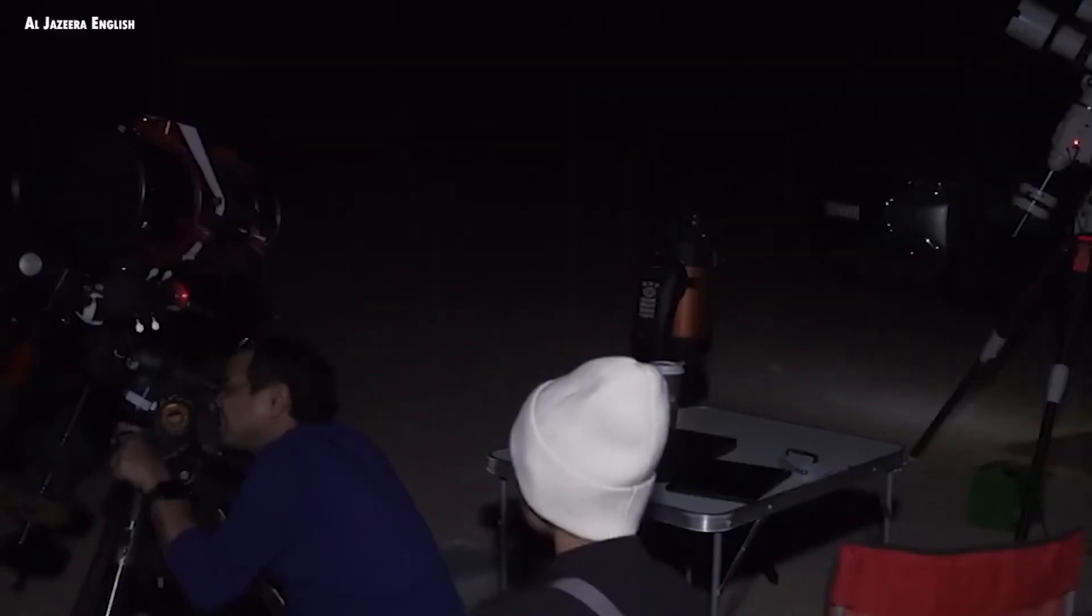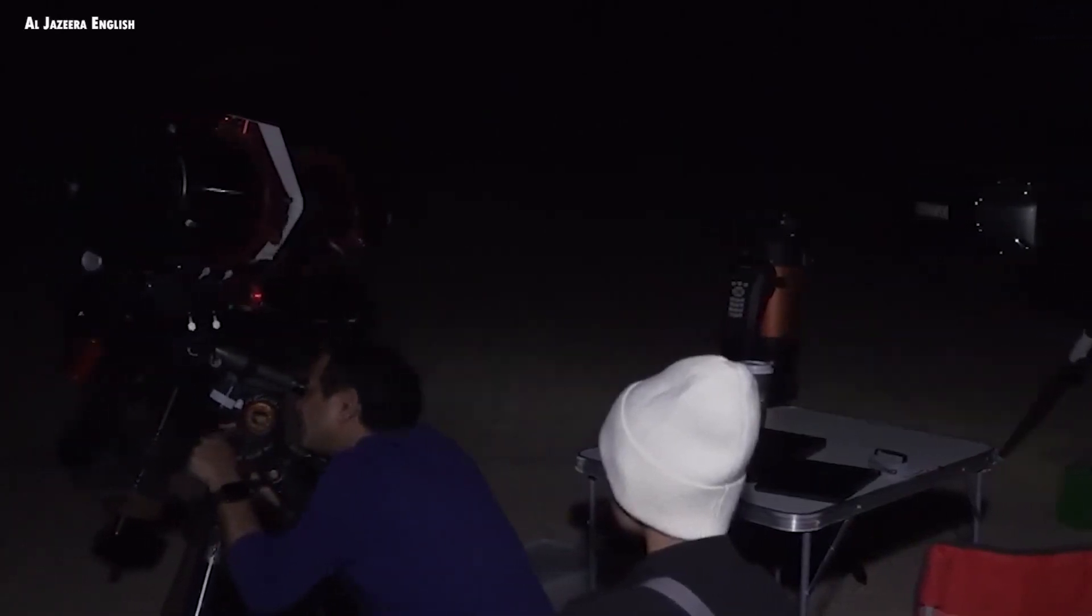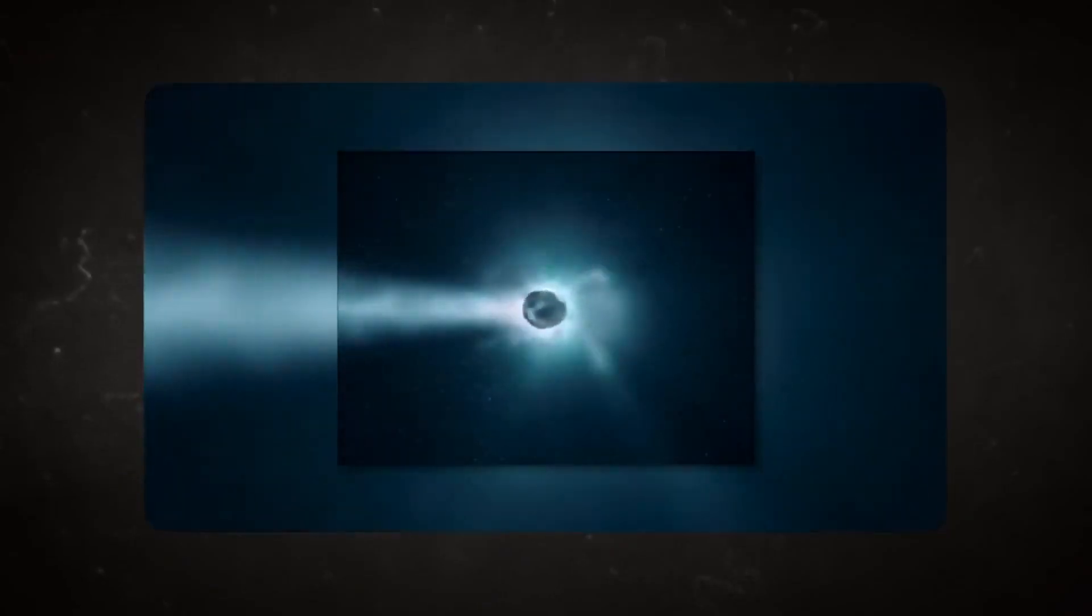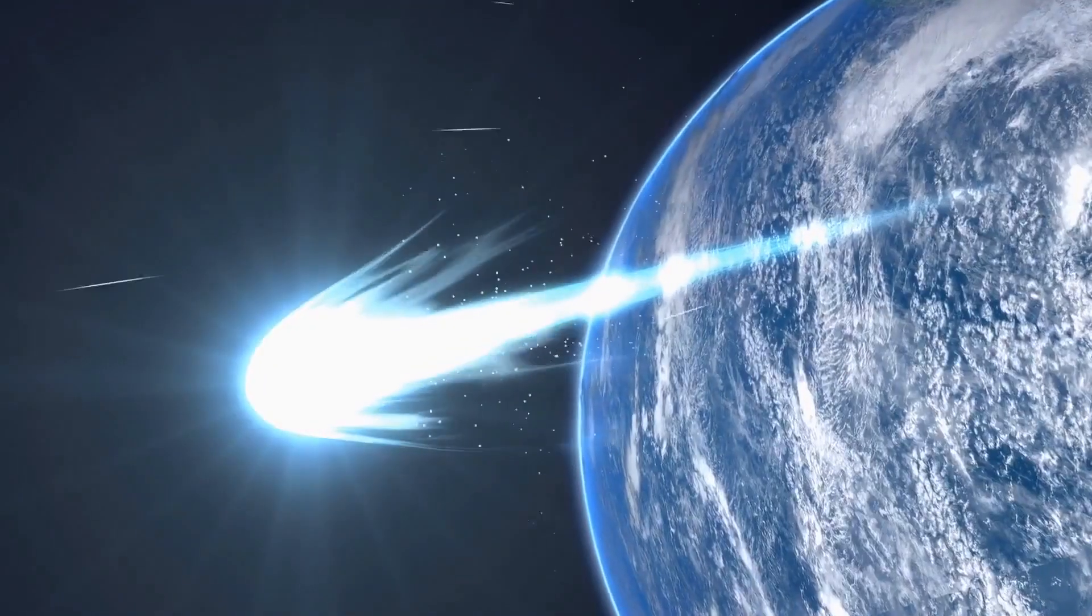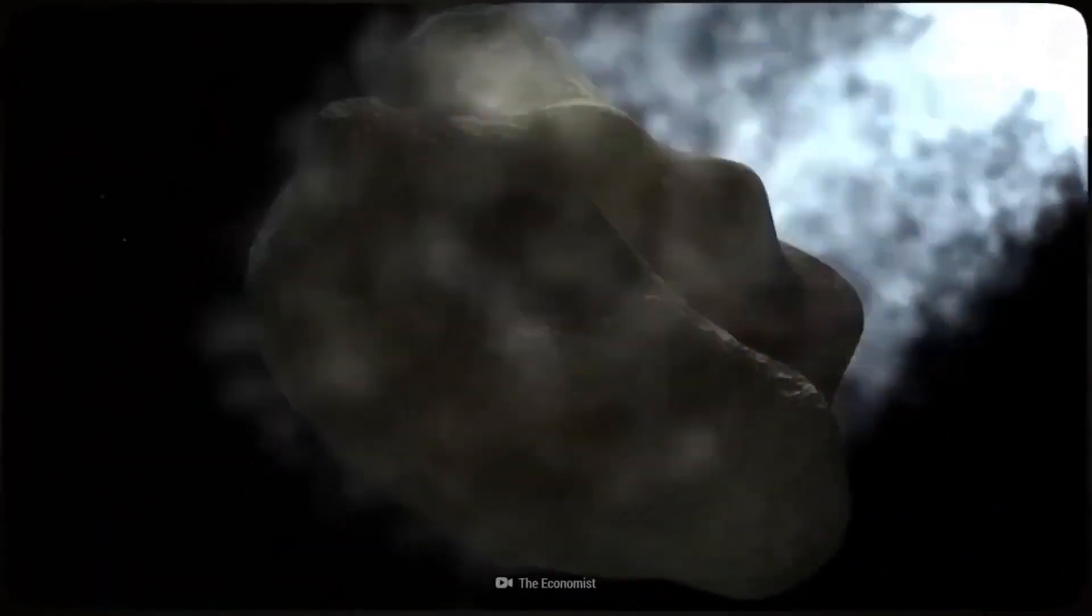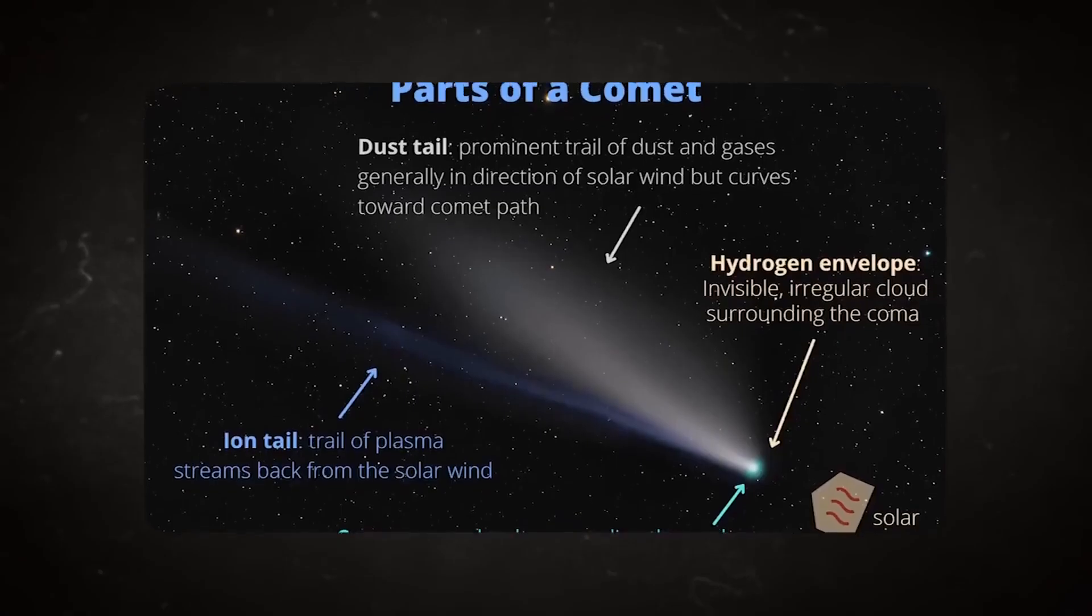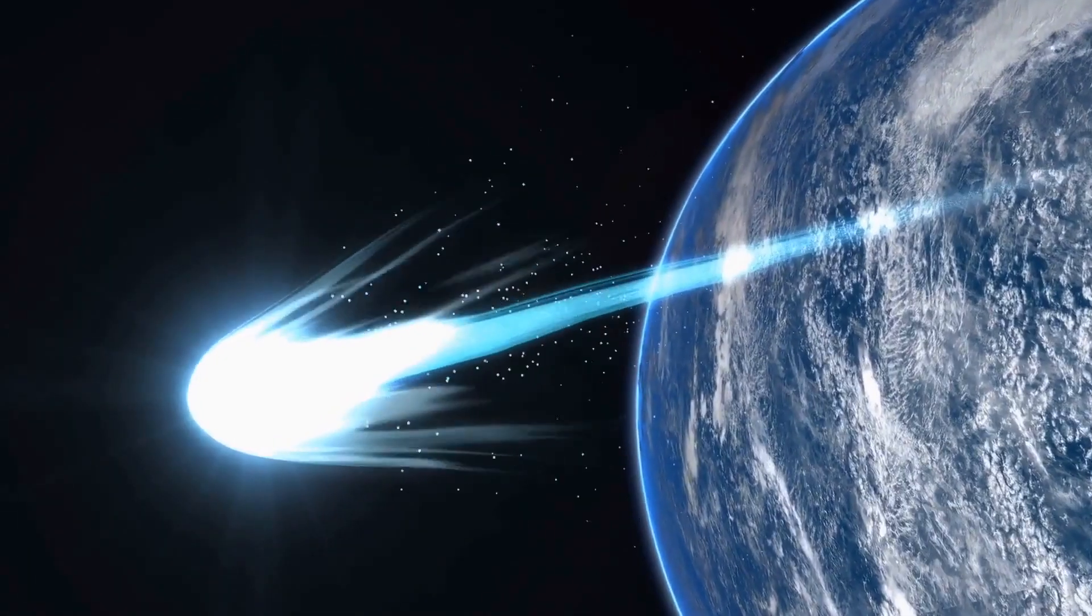Comets, for those unfamiliar, are colossal masses of frozen materials that undergo a transformation as they approach the Sun. This transformation causes them to melt and vaporize, creating what is known as a coma, a cloud of gas and plasma enveloping the comet.